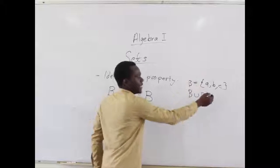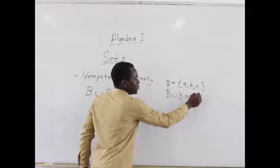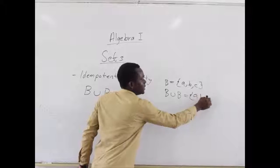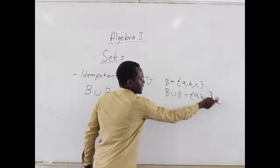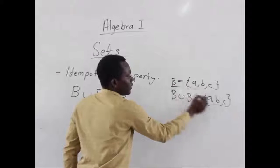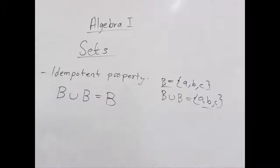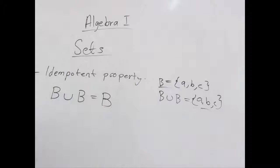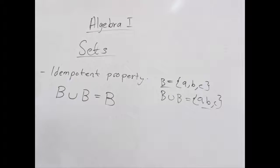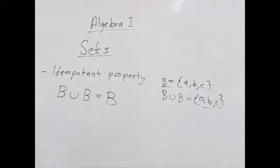What does B union B give us? Since they contain the same elements, B union B is still A, B, and C, which is the same as B. So, when you find the union of a set with itself, the set that is produced is still the same set. That's what the first idempotent property tells us.